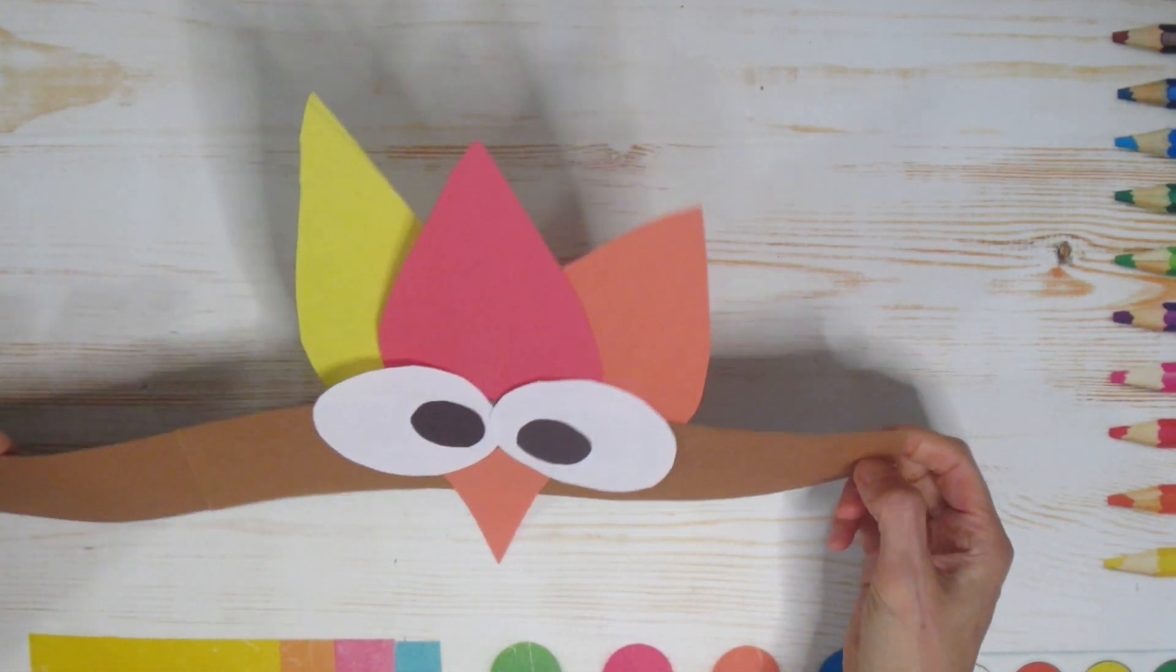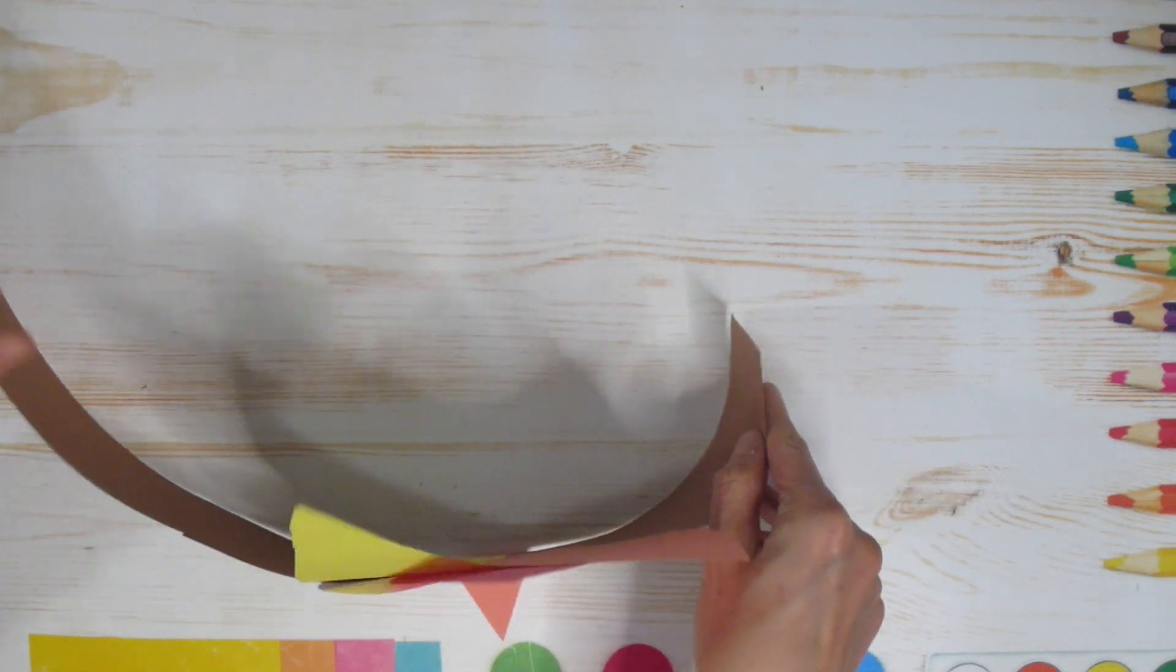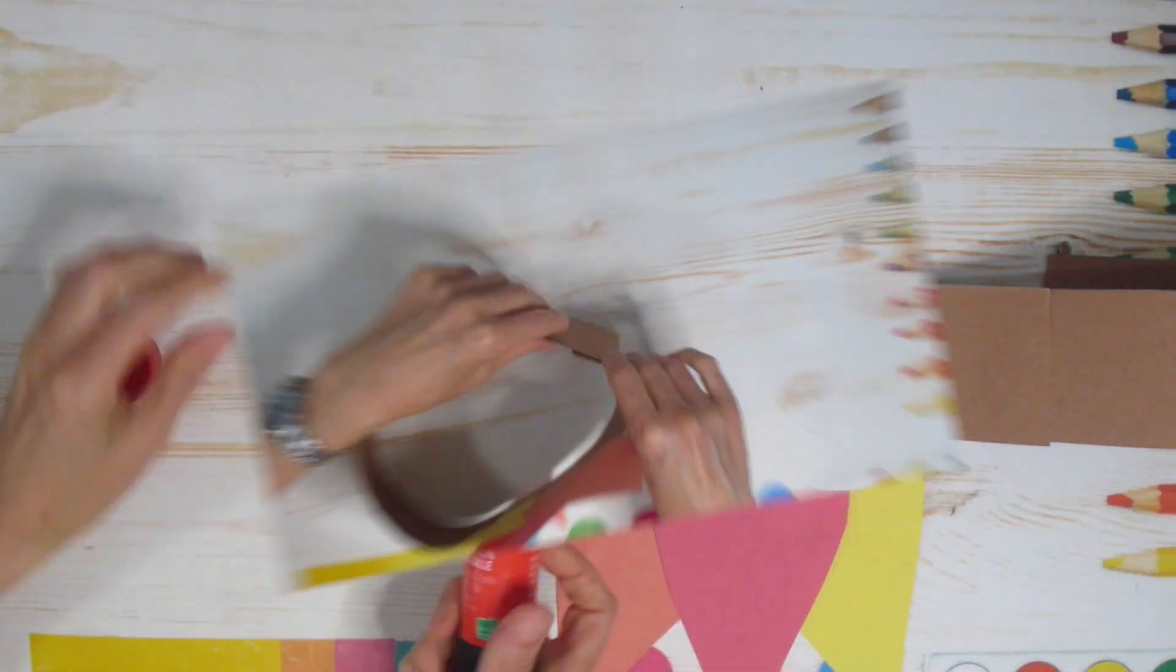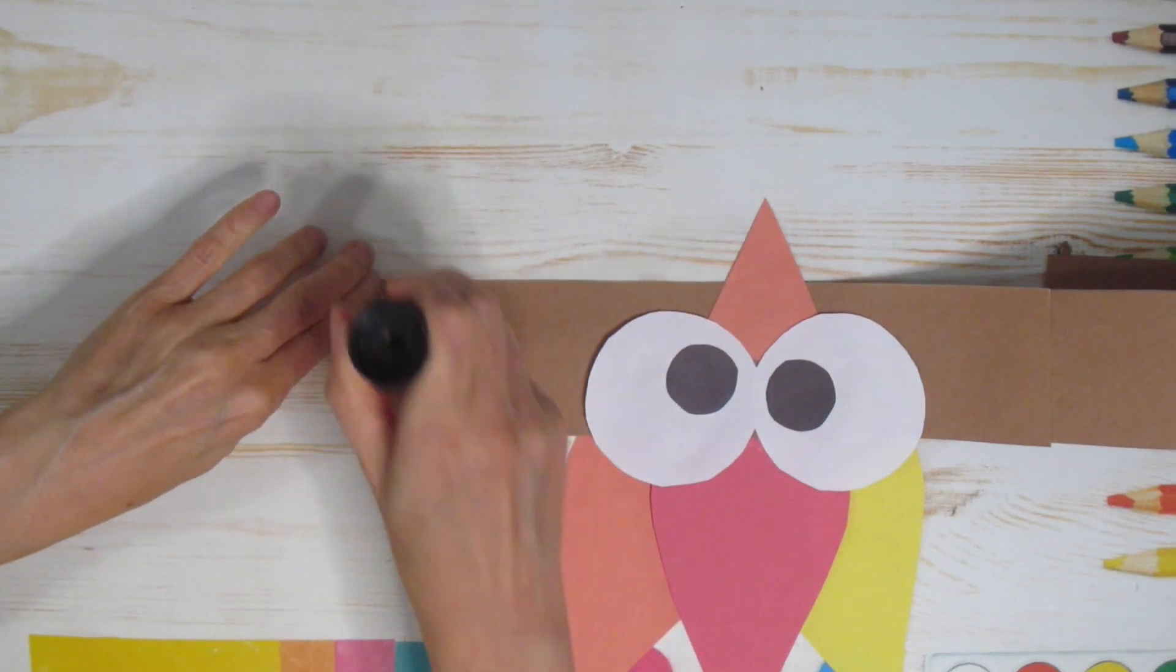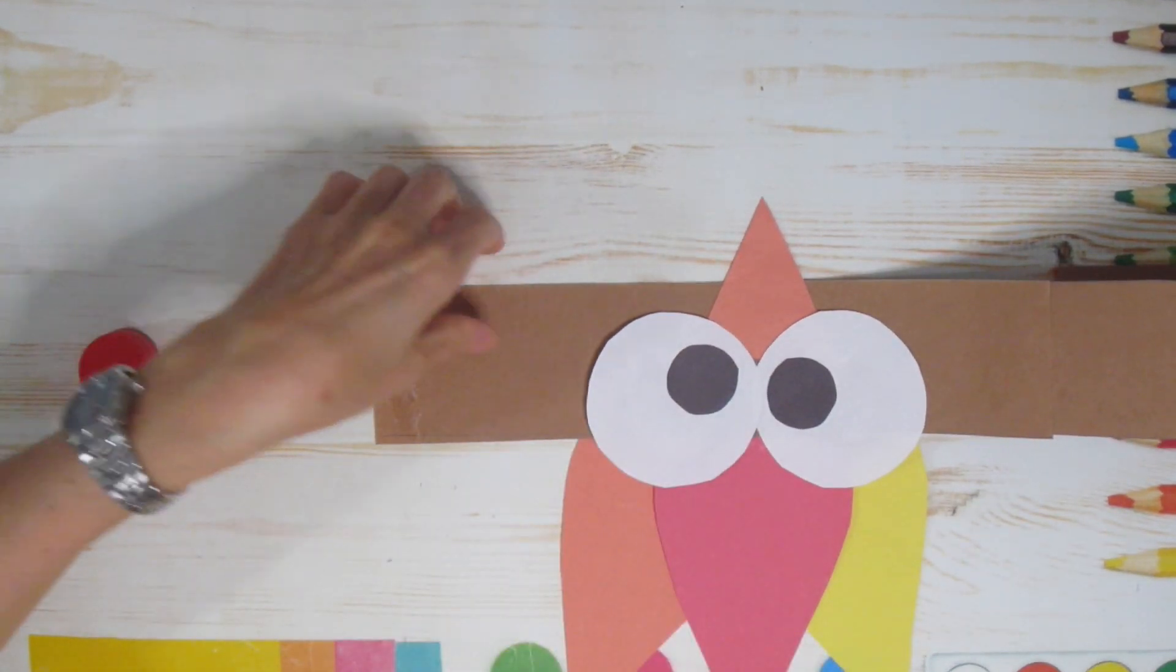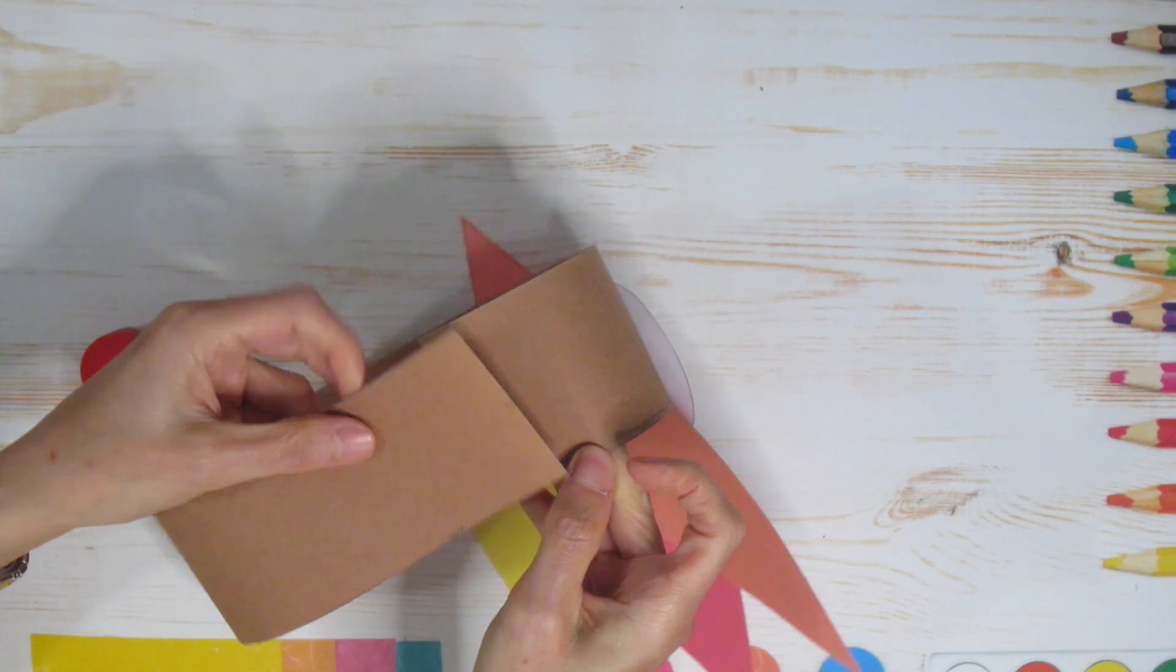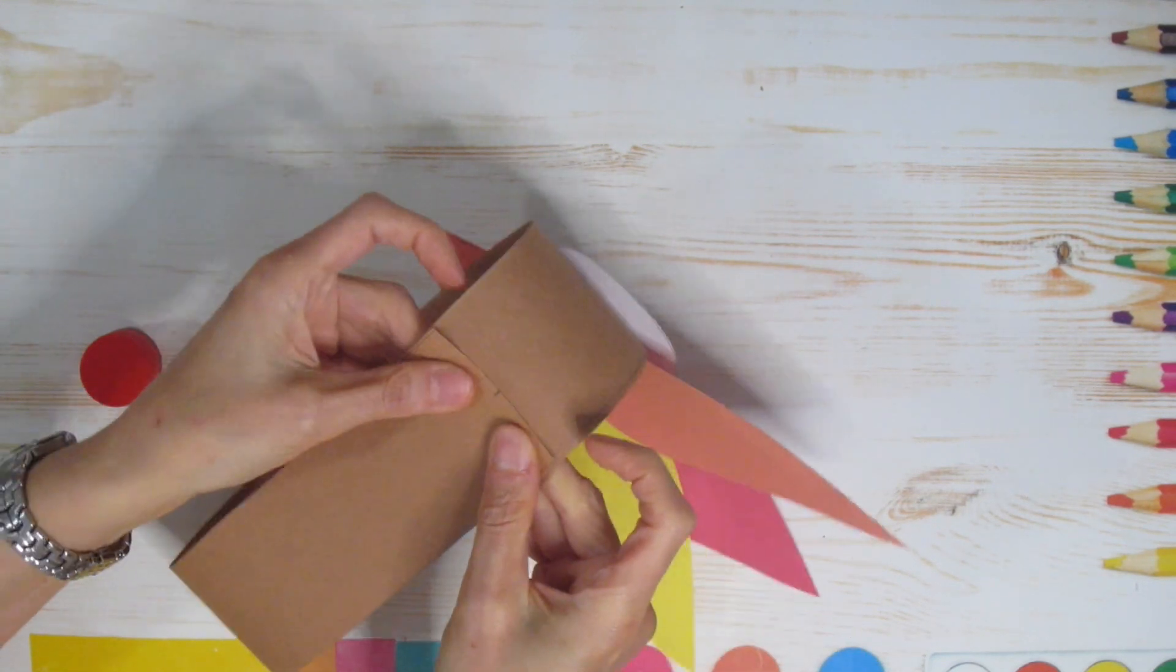Now this is where you might need someone to help you figure out the size of your head because you might want to make it a little bit smaller or bigger depending on what fits you. I'm going to put a little bit of glue on one side so that you can close it off. Bring your other side over, glue that down.